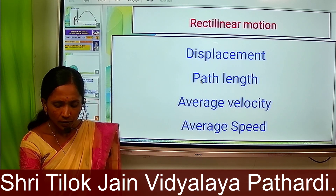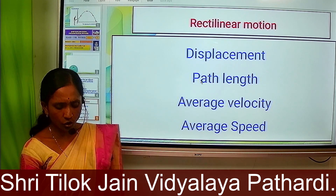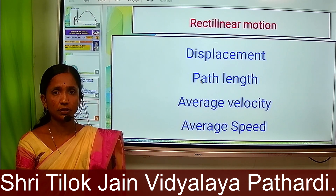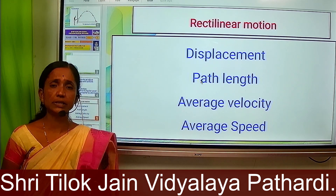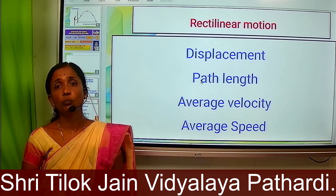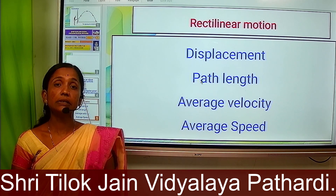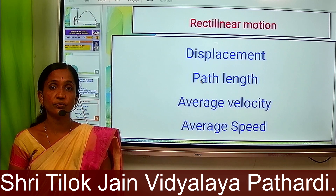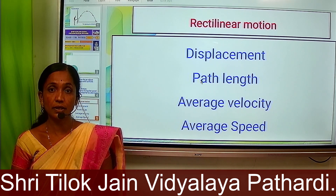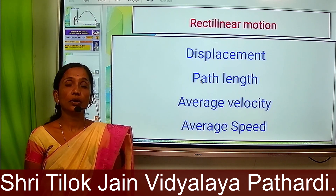What is meant by rectilinear motion? If an object's position changes along a straight line, it is called rectilinear motion. For example, a moving bus moving along a straight line — its motion is rectilinear motion. That means the change of position of an object along a straight line is called rectilinear motion. Motion in which an object travels in a straight line is called rectilinear motion.